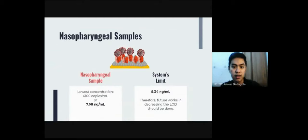And then, we also did the comparison study on the nasopharyngeal sample and our system's limit. In nasopharyngeal samples, the lowest concentration possible is about 7.08 nanograms per milliliter. Meanwhile, our system's limit is only at 8.34 nanograms per milliliter. Therefore, future work for decreasing the limit of detection should be done.